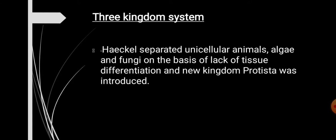The two-kingdom system was replaced by the three-kingdom system of classification, proposed by Haeckel. Haeckel separated unicellular animals, algae, and fungi on the basis of lack of tissue differentiation, and placed them in a new kingdom called Kingdom Protista. Thus, he introduced a third kingdom, namely Kingdom Protista.